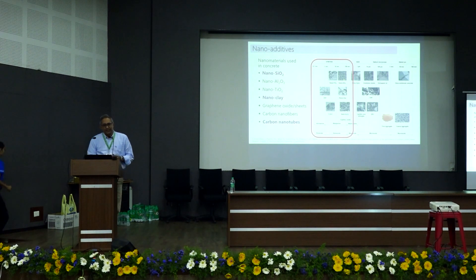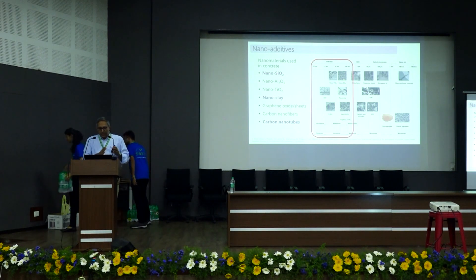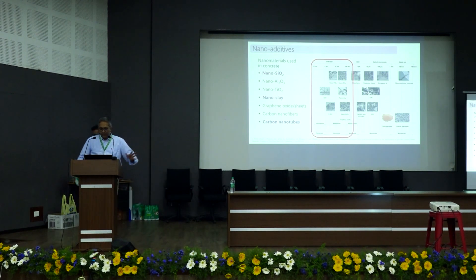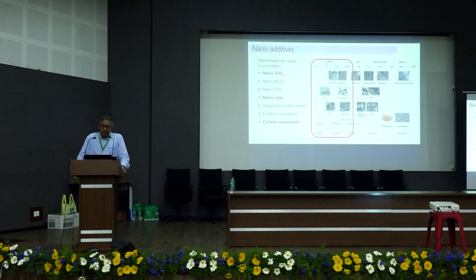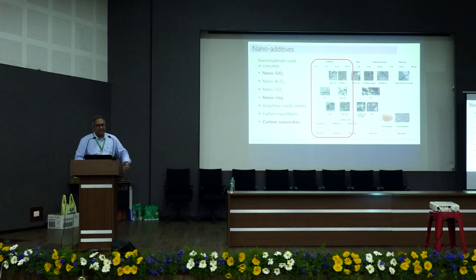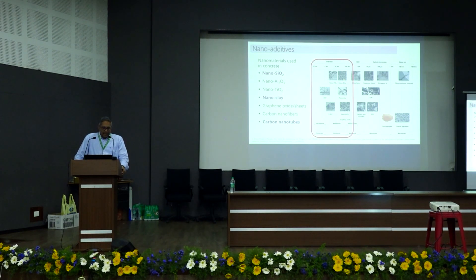Going to the very smallest of additives — the nano additives — here's a whole list of nano additives. Looking at the range, you go from 0.1 nanometers on the extreme left to about 10 millimeters, way out of the nanometer scale. Just to give a reference, the CSH is at about one nanometer scale. Nano silica, nano clay, and carbon nanotubes are basically in the same size range as the CSH. If I look at CNTs or carbon nanotubes, the advantage is that I can start reinforcing the material at that scale, if done right.